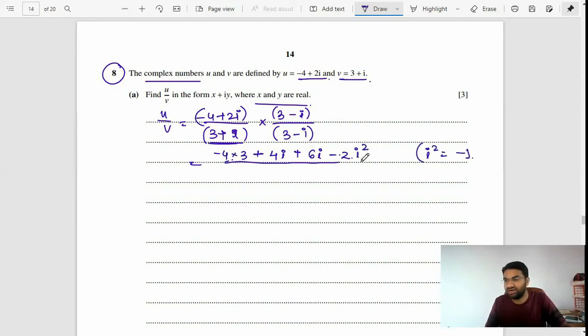Divided by 3 plus i and 3 minus i, which is 3 squared minus i squared. You can simplify it further like negative 12 plus 10i plus 2, divided by 9 plus 1, which is 10.